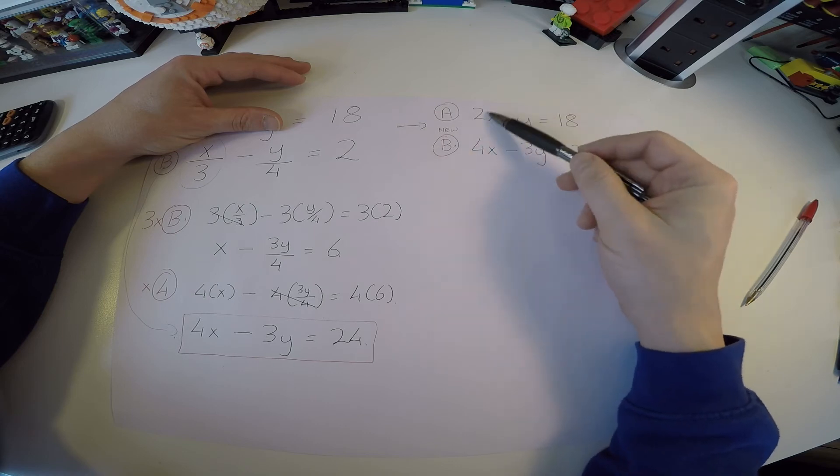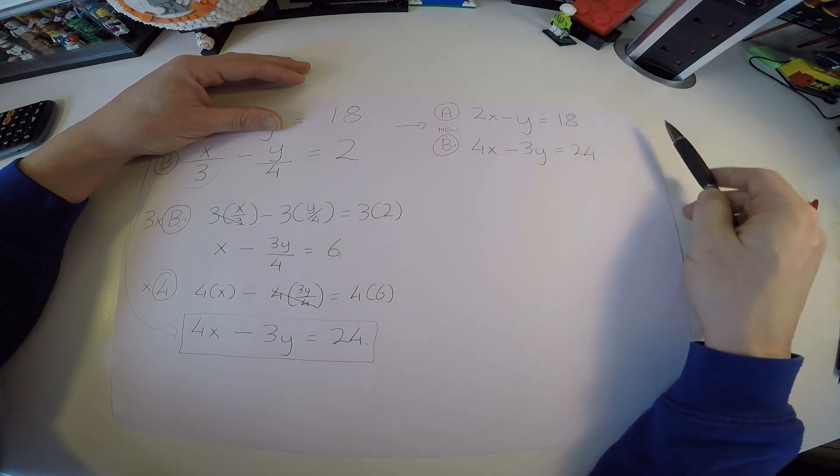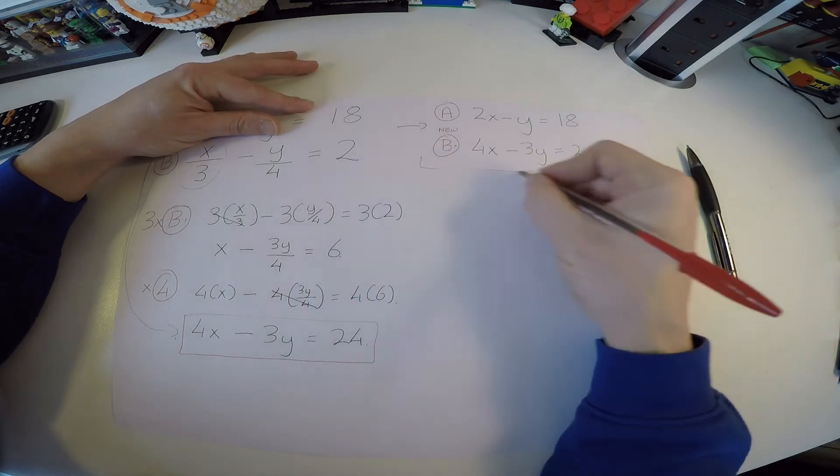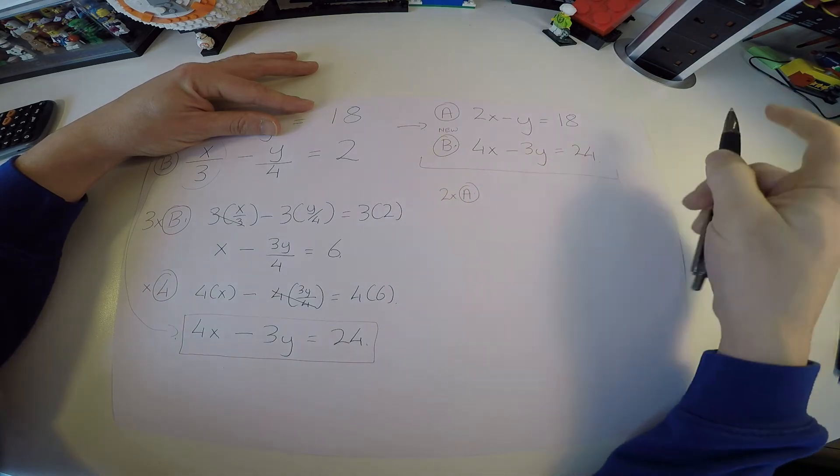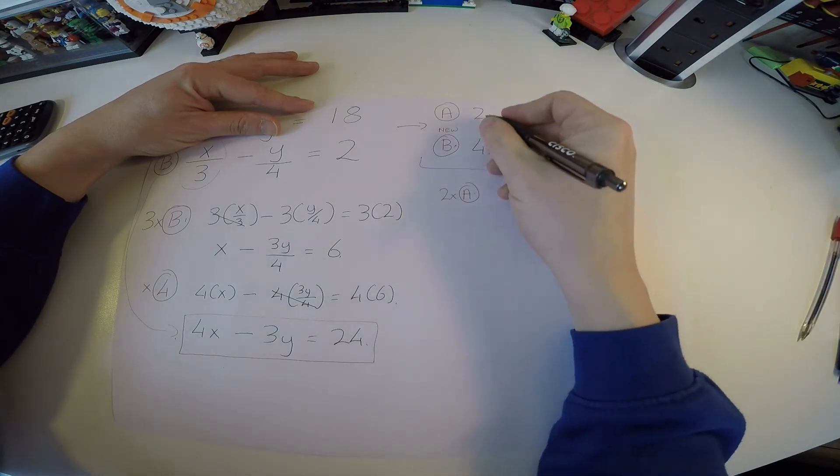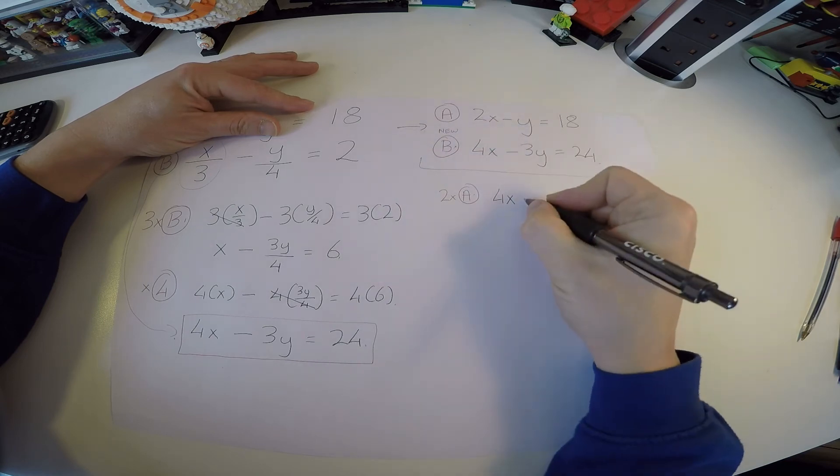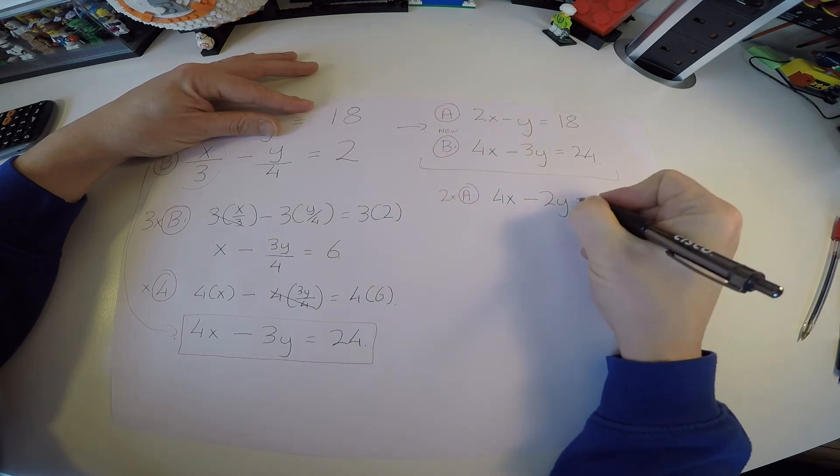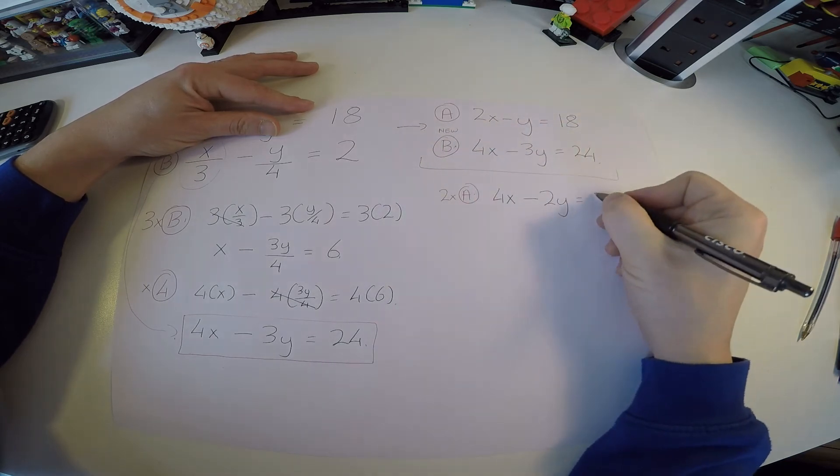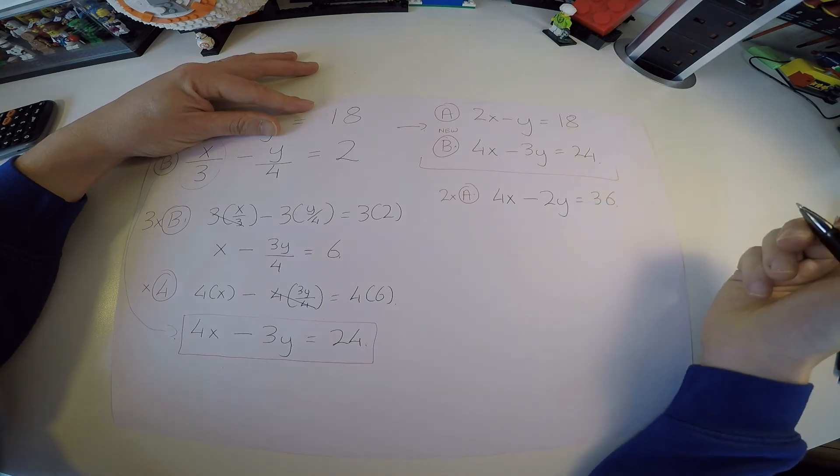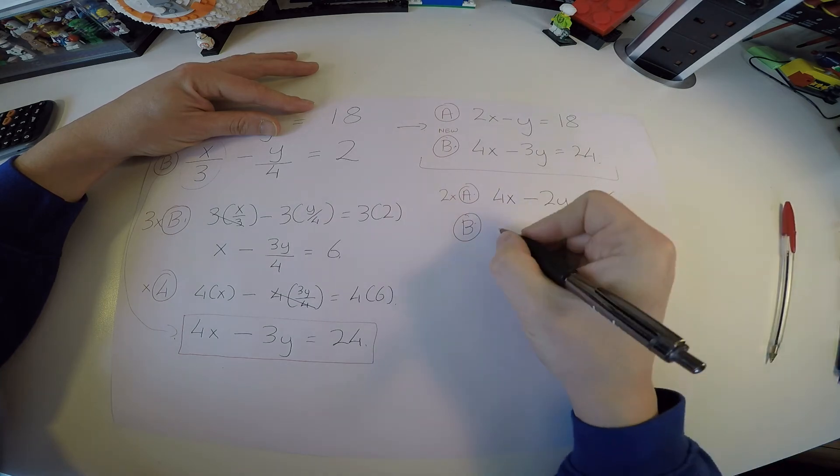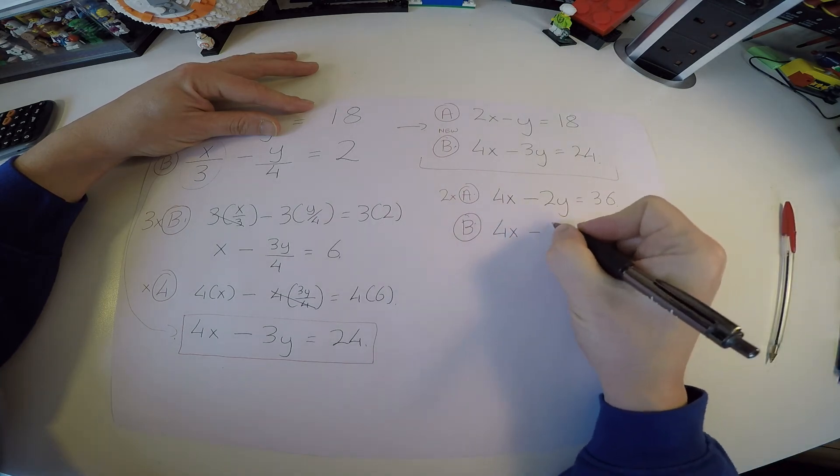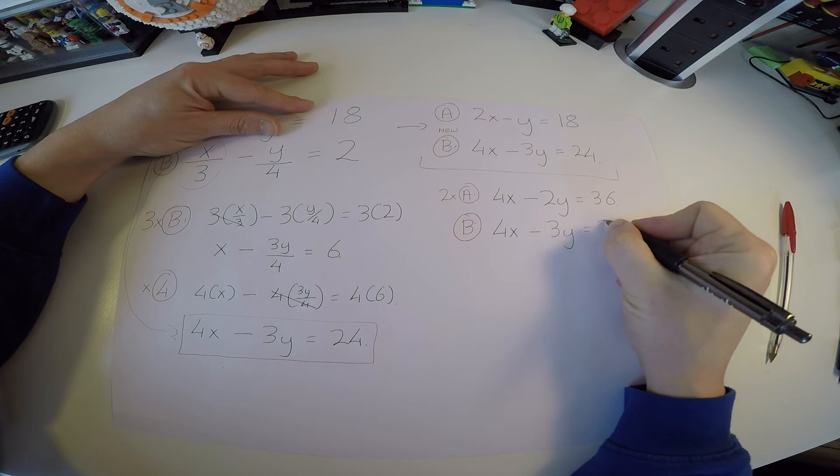How can we mash this up? Well we can either multiply the top line by 2. That will give us the 4x we need here. Or multiply it by 3 and that will give us the 3y we need here. So let's just do the first one I said. Let's just rewrite this stuff now with 2 times a. So 2 times a gives me 2 times 2x, which is 4x. 2 times minus y, which is minus 2y. And 2 times 18, which is 36. And let's write my b underneath. So my b now is still 4x minus 3y equals 24.